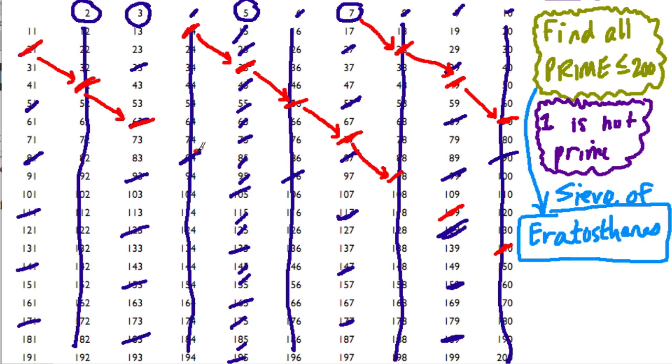Multiples of seven. Seven, seven, down and over, down and over, down two and over, down two and over, and so forth. Looks like all of these are already crossed out.